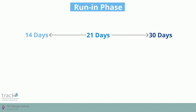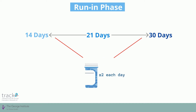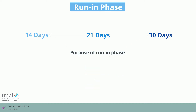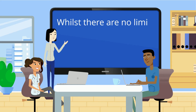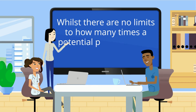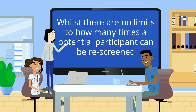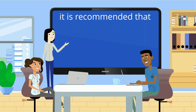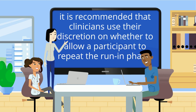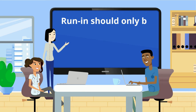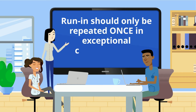The run-in phase is for 21 days, with the range being 14 to 30 days. During this time, all participants will be asked to take a placebo tablet twice each day. The purpose of the run-in phase is to ensure eligible patients are able to adhere to the treatment regimen and to serve as a washout period. Whilst there are no limits to how many times a potential participant can be rescreened, it is recommended that clinicians use their discretion on whether to allow a participant to repeat the run-in phase, and run-in should only be repeated once in exceptional circumstances.